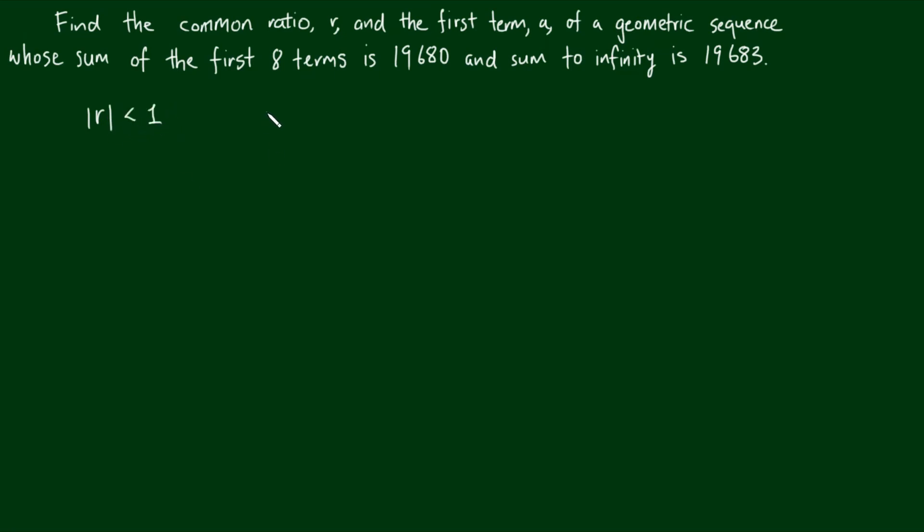The formula for the sum to infinity is s equals the first term a divided by one minus r, and we are given that this is equal to 19,683.